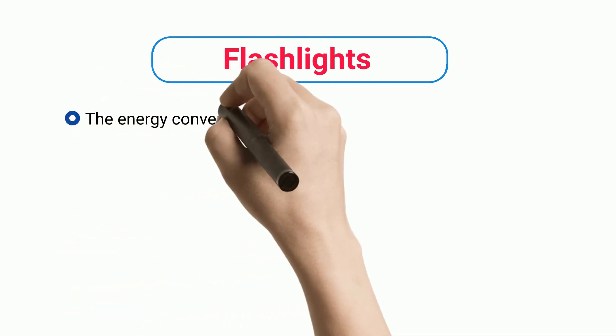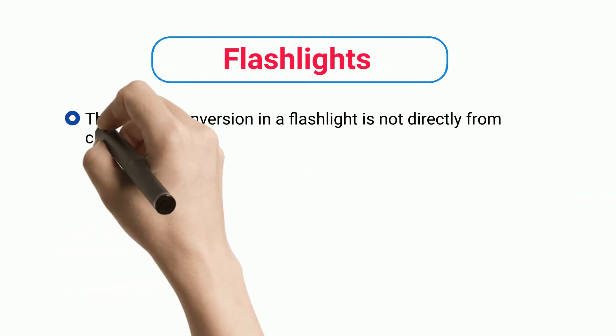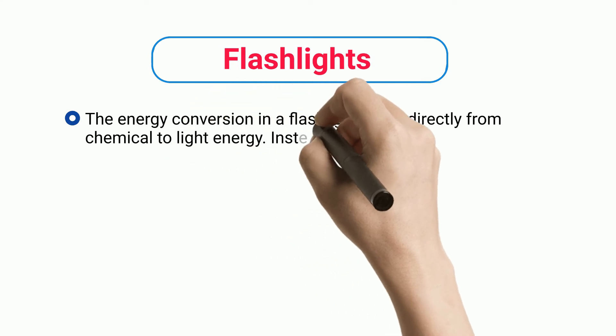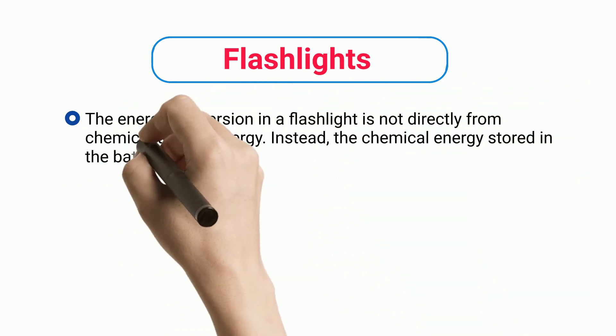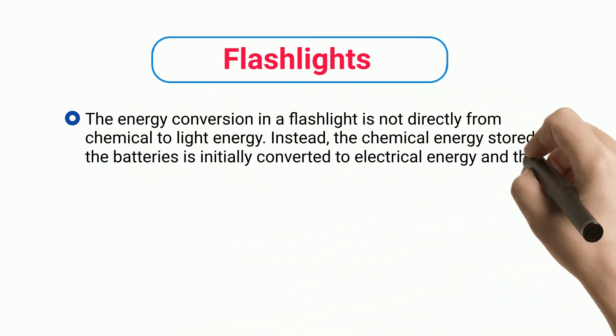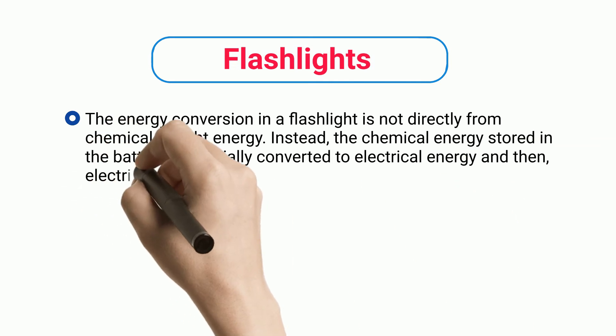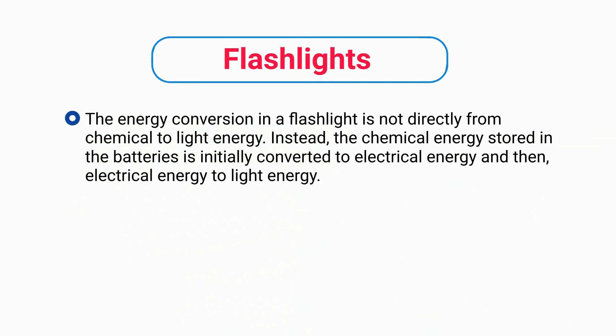Flashlights. The energy conversion in a flashlight is not directly from chemical to light energy. Instead, the chemical energy stored in the batteries is initially converted to electrical energy and then electrical energy to light energy.